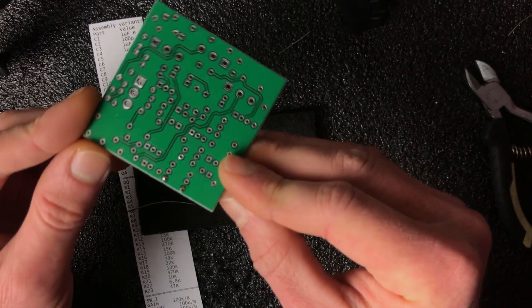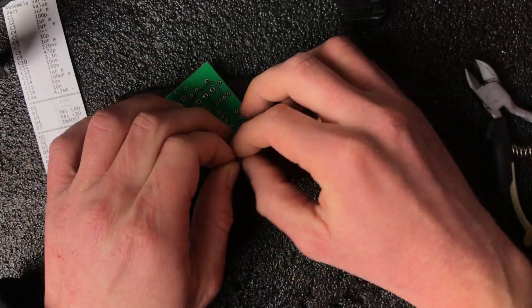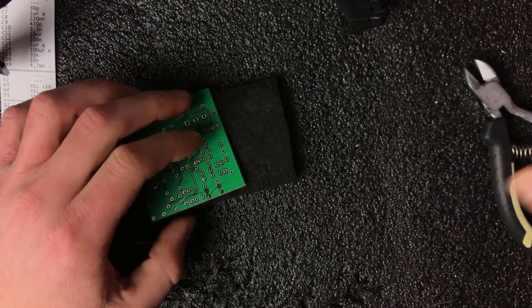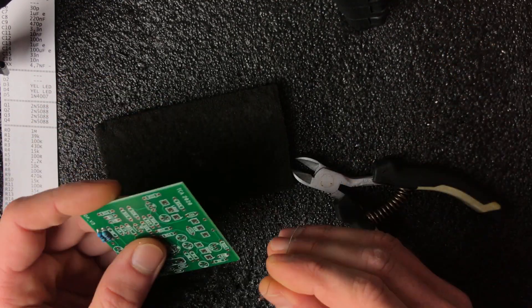Now it's time for other resistors. I will speed up it right now but process is the same. Just check the number and value of part and then find the number on the PCB.